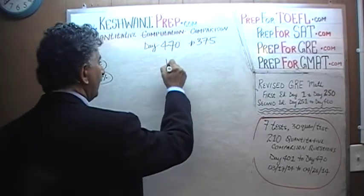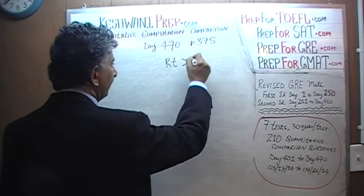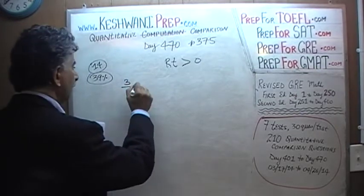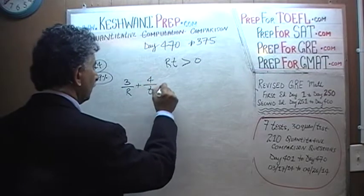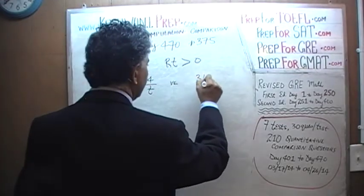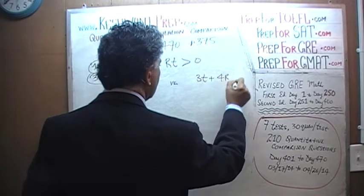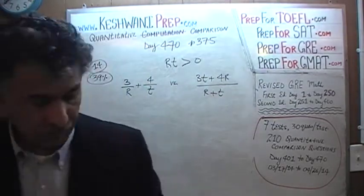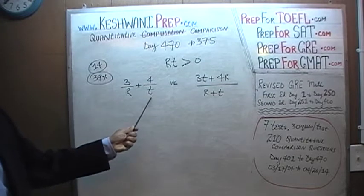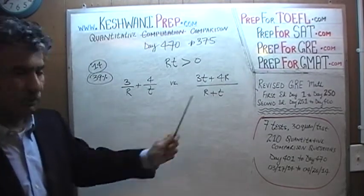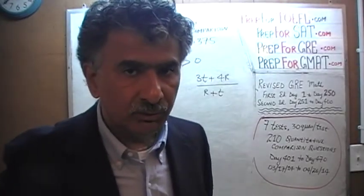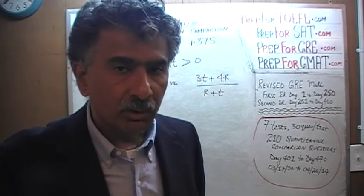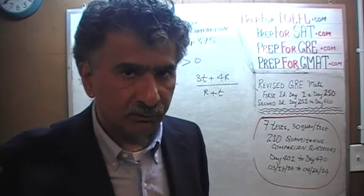Here is what the problem says. We are told that we have two quantities, R and T, and that R times T is a positive quantity. What we have been asked to compare is 3 over R plus 4 over T versus 3T plus 4R over R plus T. Do the problem yourself first. Once you have finished solving it, compare your work against the work that you and I will do together in a few seconds.